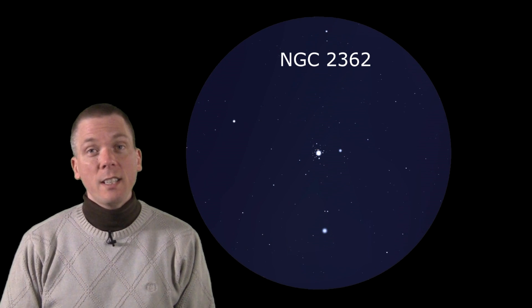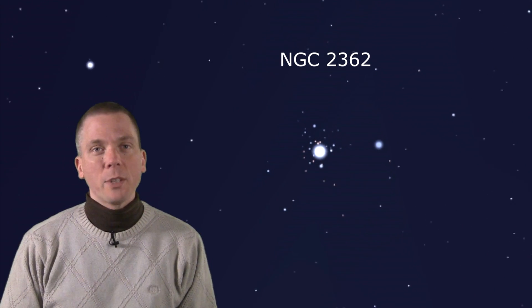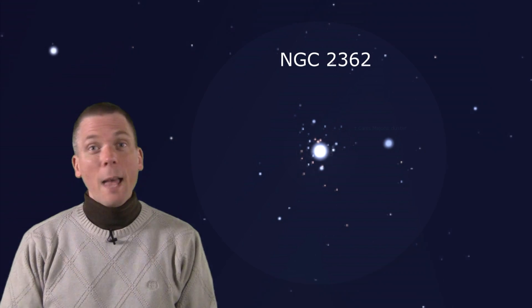Open clusters are like snowflakes. There are no two that are alike, and they all have different sparkles and charm to them. Appearing almost like a halo around Tau Canis Majoris is NGC 2362, an incredibly young open cluster that is either actually associated with Tau, or is perhaps a foreground object, with a bright main star just happening to lie right in the middle from our perspective.